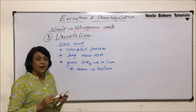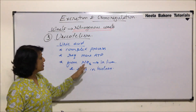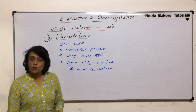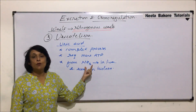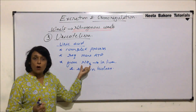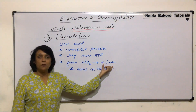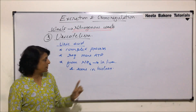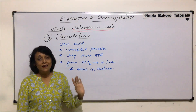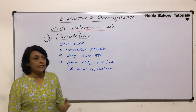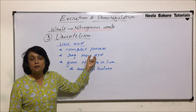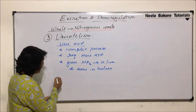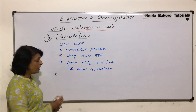It is a highly expensive process as ATP requirement is more, and it is also a complex process. Most of the uric acid formed from ammonia is produced in the liver, but a small quantity is also produced in the kidney. So what is the advantage of spending so much energy and undergoing this complex process? The advantages are that uric acid...